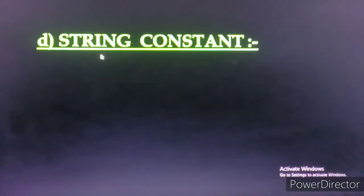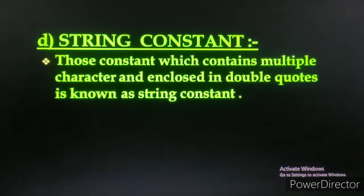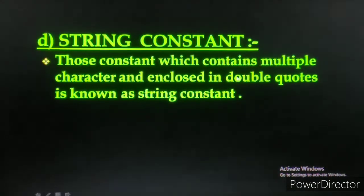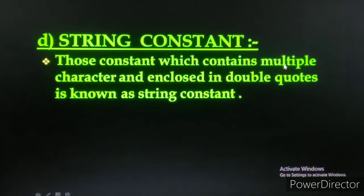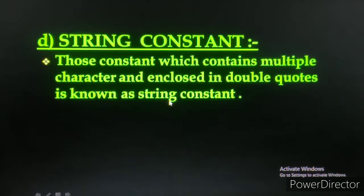अब अगला और last constant आता है — string constant। Character का opposite है। Character बोला कि मेरे पास एक ही होना चाहिए, जबकि string बोलता है कि मेरे पास multiple character होने चाहिए। Character बंद रहता है single quotes में, जबकि string बंद रहता है double quotes में। यानि those constants which contain multiple characters and are enclosed in double quotes — वो string constant कहलाएंगे।